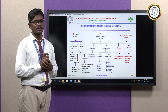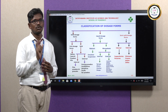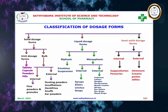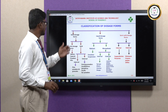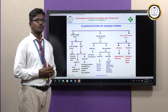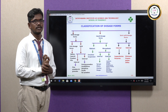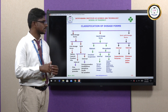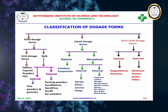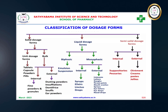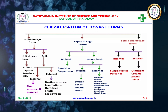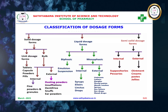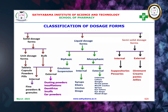Unit dosage form means it has a specific amount of the drug — for example, tablets and capsules, which contain the exact amount of the drug. Bulk dosage form does not have dose specificity. Bulk dosage forms are classified into two types based on the route of administration: internally administered and externally administered. Internally administered examples are finely divided powders and granules. Externally applied powder dosage forms include dusting powders, insufflations, dentifrices, snuffs, and ear powders.